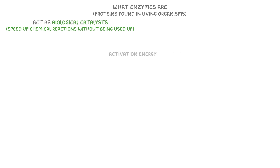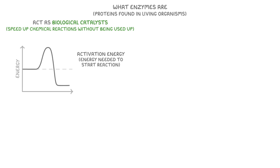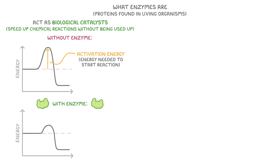To understand how they do this, you need to know that activation energy is the initial energy needed to start a reaction. This graph shows how the energy level changes during a reaction, and you can see that this much energy is needed to start this particular reaction without an enzyme. This arrow represents the activation energy. If we look at the same reaction with an enzyme, we can see that the activation energy is much lower, which means that overall reactions happen more easily and quickly with the help of enzymes.